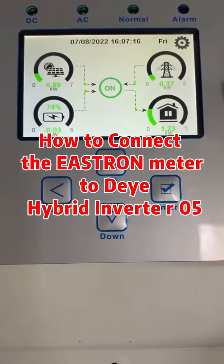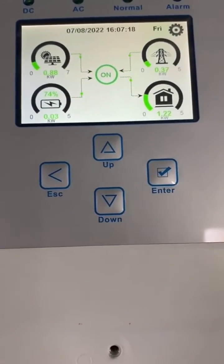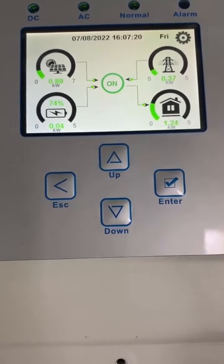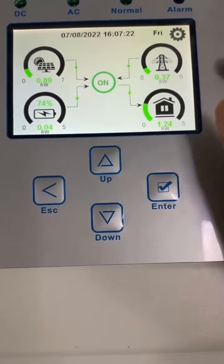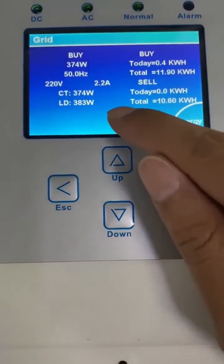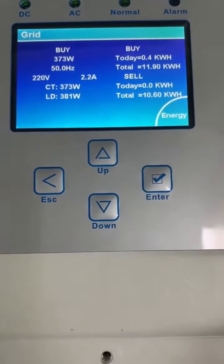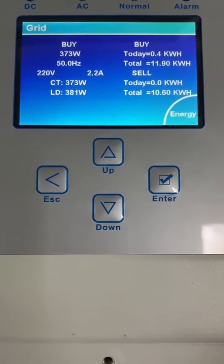And when and how to judge if the meter is already communicating with the hybrid inverter. We should check here - here is the voltage. Now it shows 373 volts.